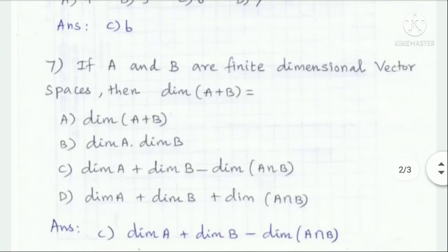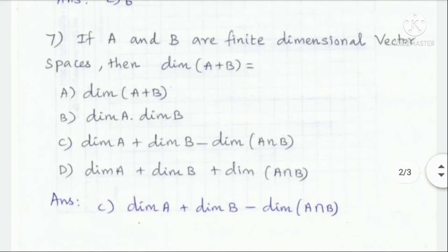If A and B are finite dimensional vector spaces, then the dimension of A plus B — the answer is option C: dimension of A plus B equals dimension of A plus dimension of B minus dimension of A intersection B.